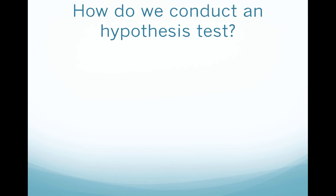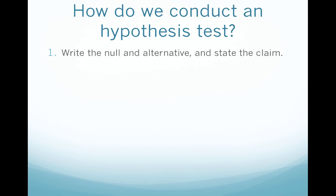So how do we conduct a hypothesis test? The easiest way to lay this out is to give you a recipe — everybody can follow a recipe. Step one: write the null and alternative and state the claim. Every single time I do an example you're going to see me do these, and on your quiz the first question is going to be to write the null and alternative and state the claim.